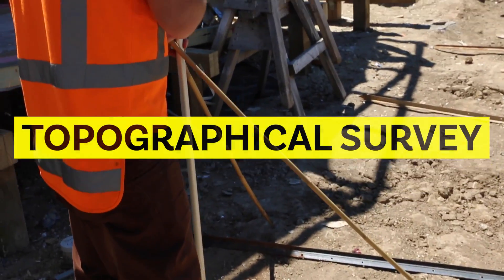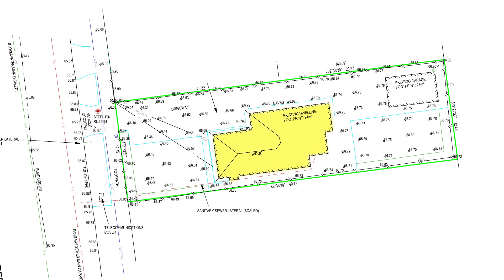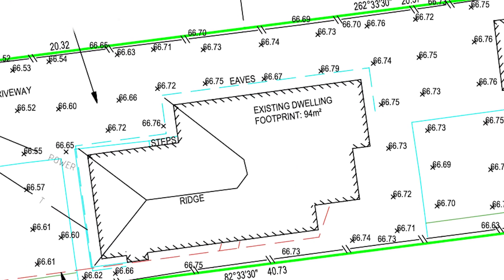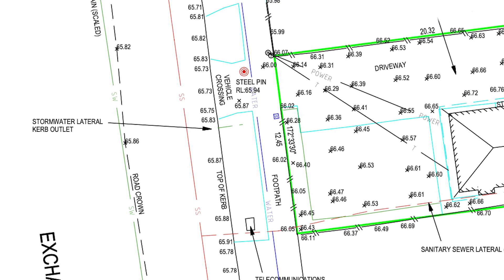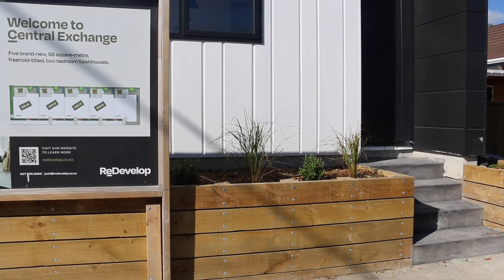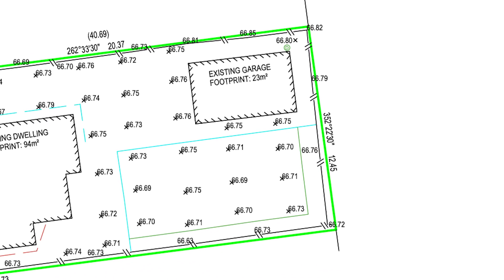A couple of other things we might need — we might need a topographical survey and it shows you everything: existing dwelling, existing garage. This site is about 66 meters above sea level and relatively flat across the whole thing — from this point to this point is only 300 mils. The build platform is slightly higher than the road and when you're pushing right up to the front edge of the boundary, that's something to think about — we did have to put a small retaining wall in. You can see where the existing fence is, and that fence is going to need to get removed and put exactly on the boundary.